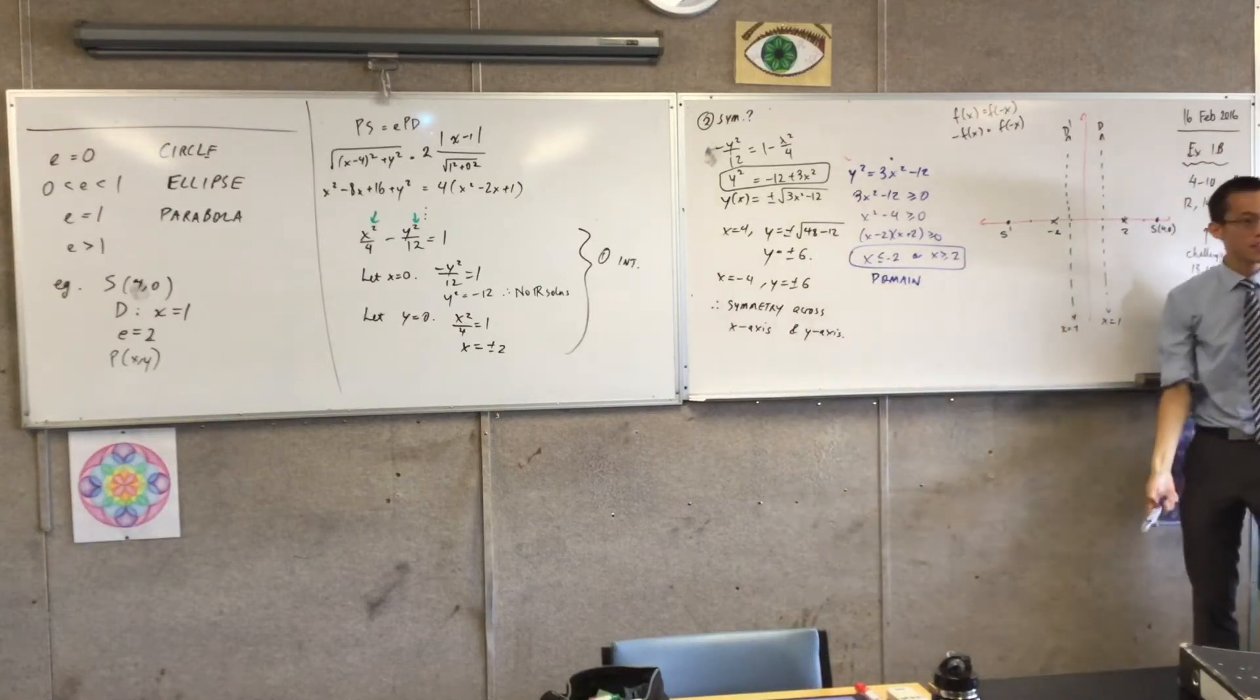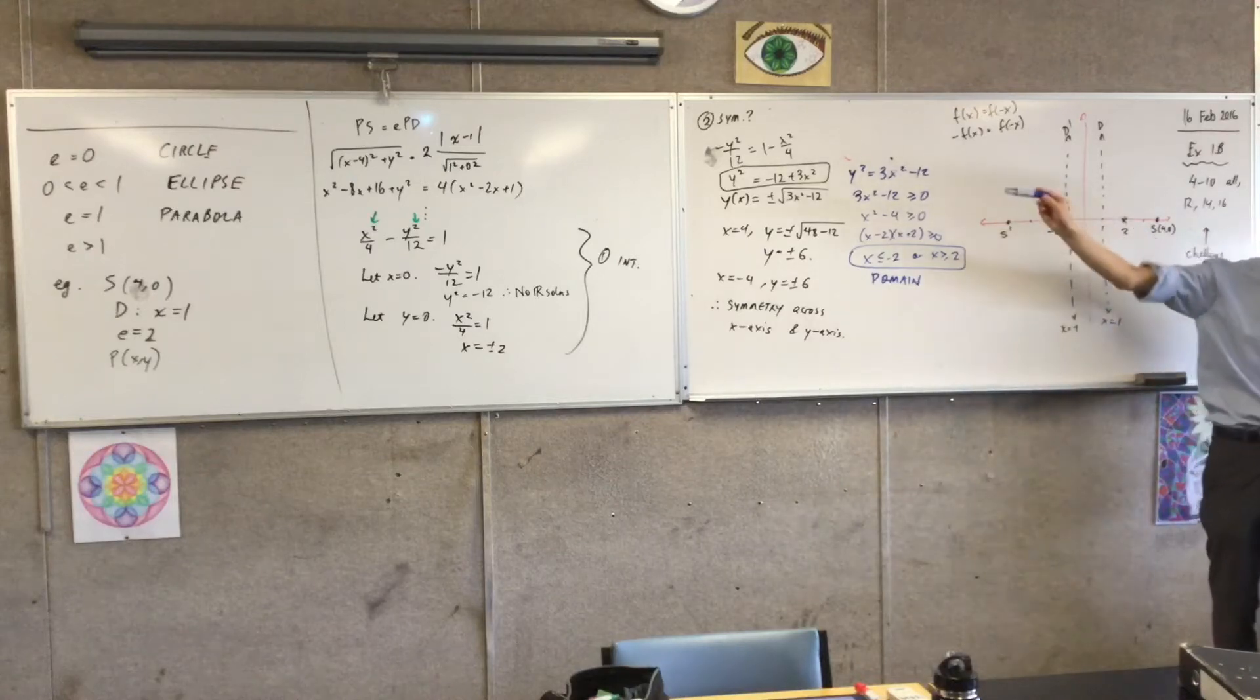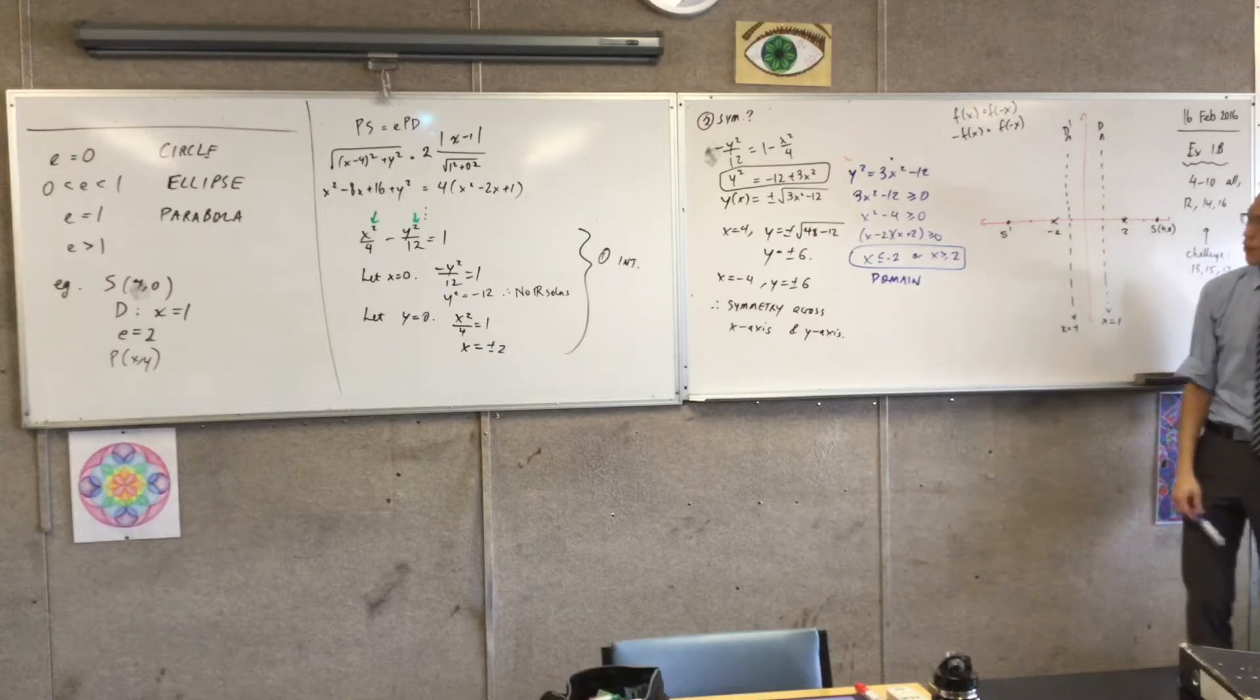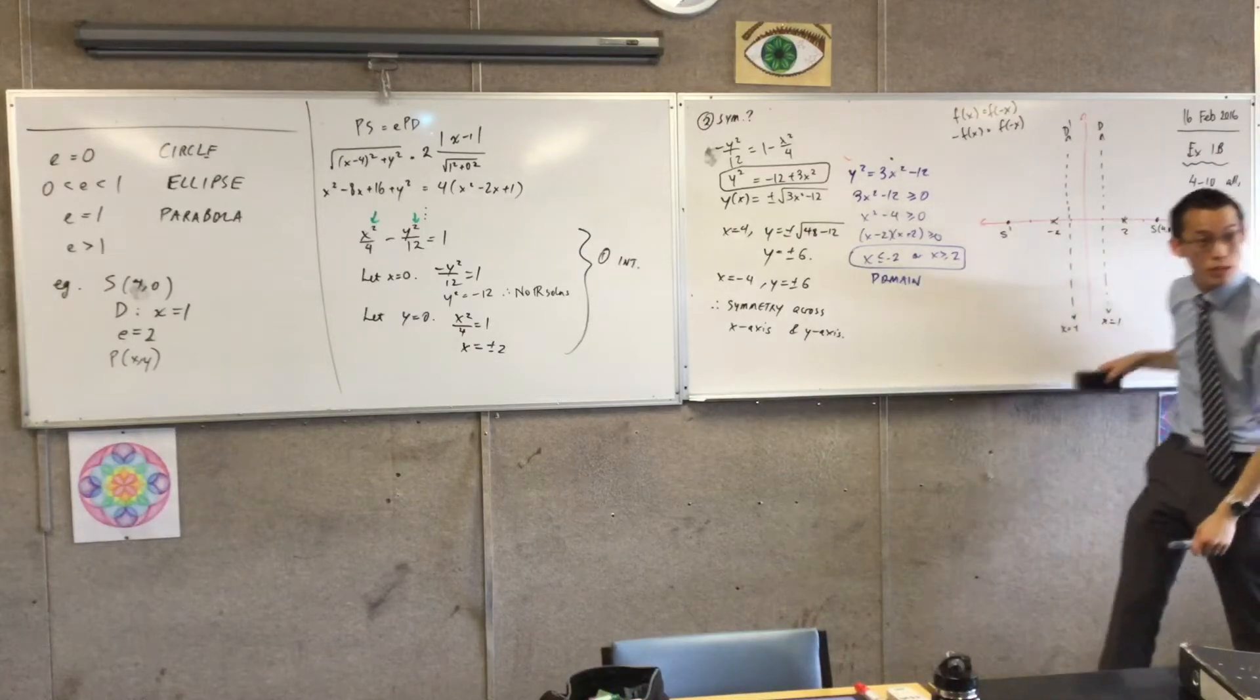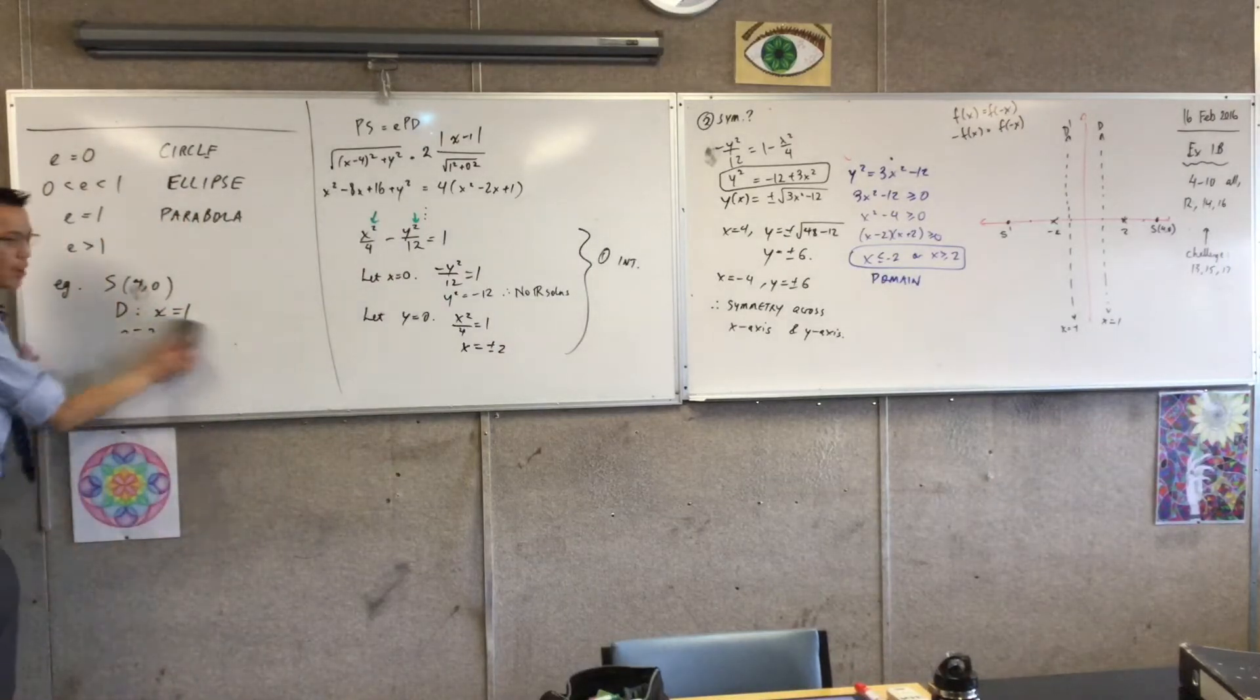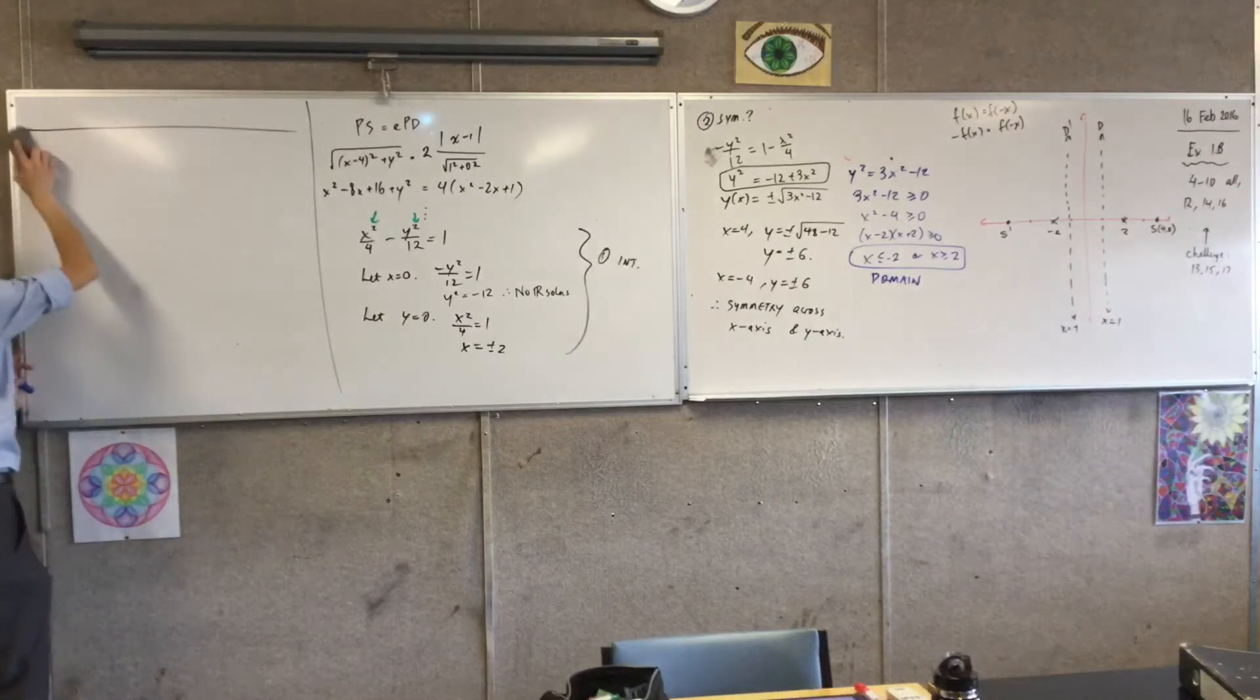So I'm interested in what happens as x approaches infinity. Since it's symmetrical, that will tell me what happens as x approaches negative infinity. Does that make sense? So have a look at the board, look at everything that's written on the board. Which of the things on the board is going to be most helpful to try and determine what is this behaving like as x approaches infinity?